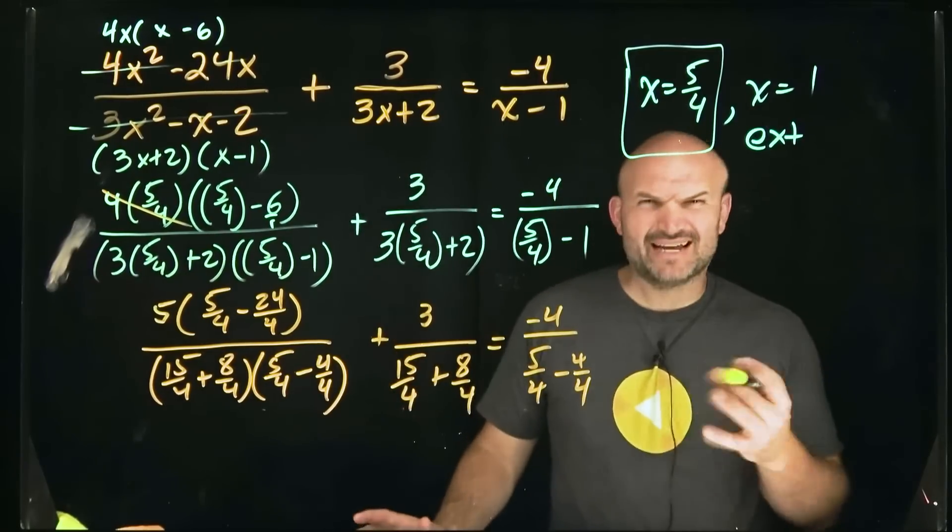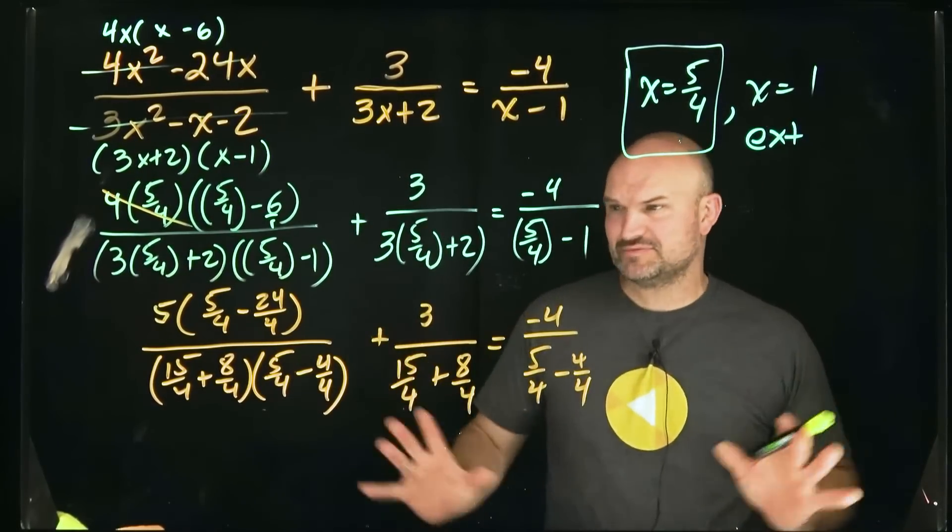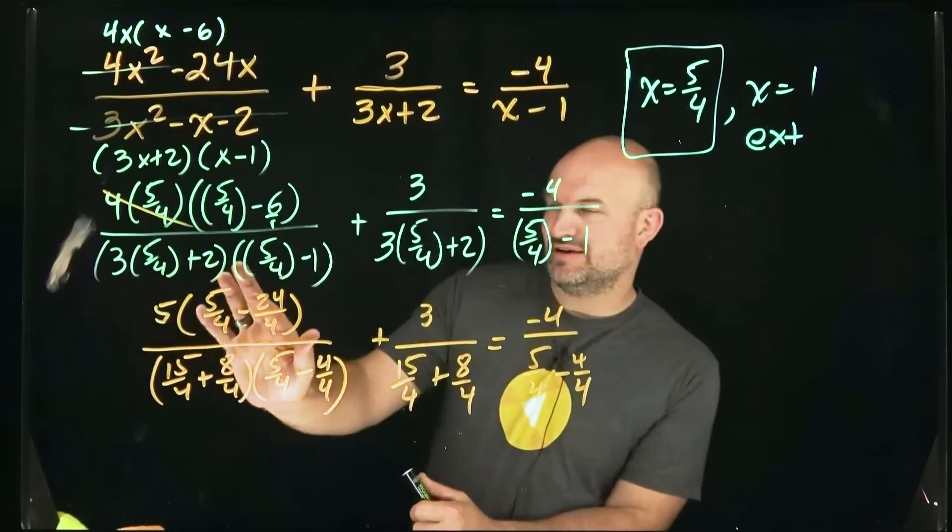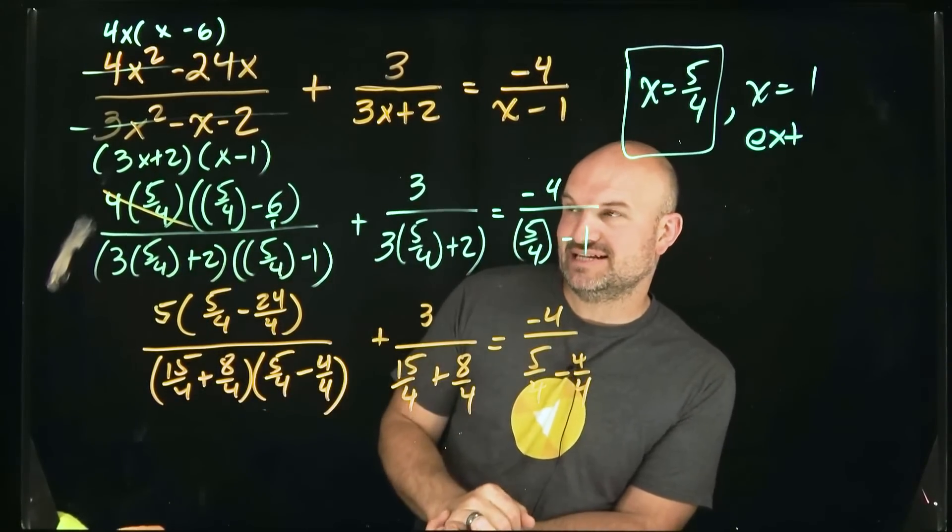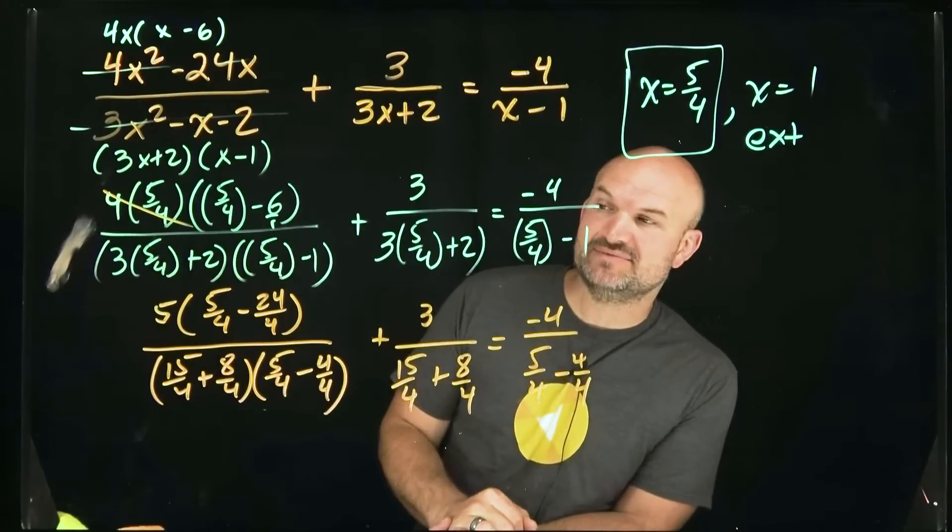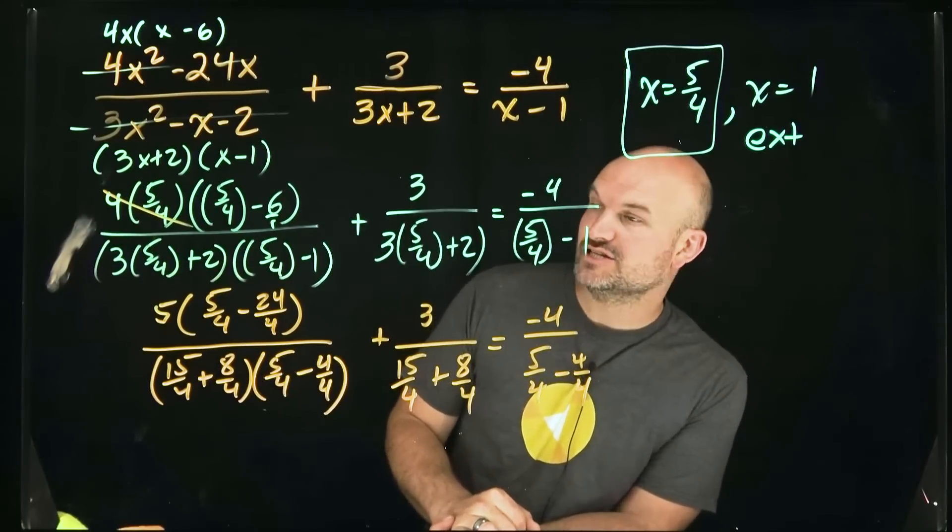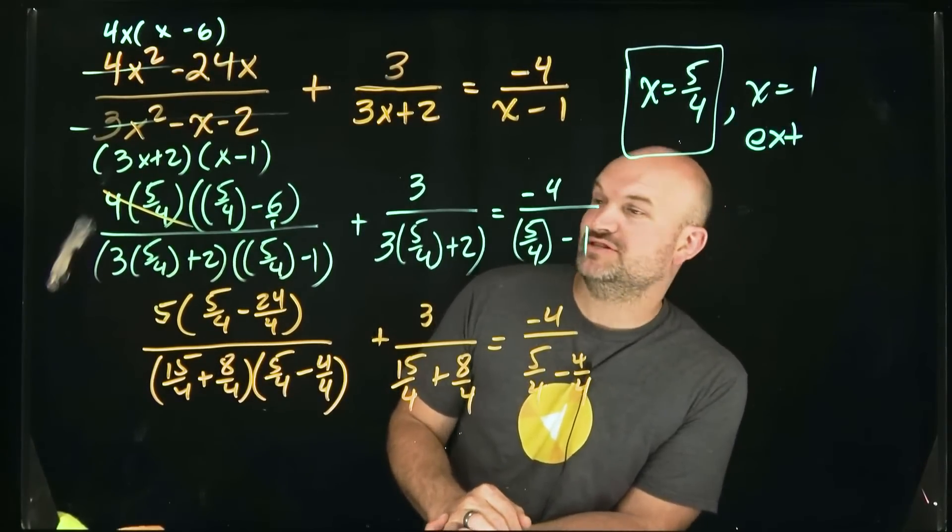Now let's, we can do a lot of this actually kind of in our head to save some space because we are losing on some space here. So we have five minus 24 is going to be negative 19. Five times negative 19 is going to be 95, right? Because five times 10 is 50, five times nine is going to be 45. So 50 plus 45 is going to be negative.